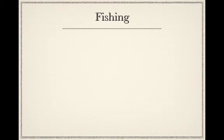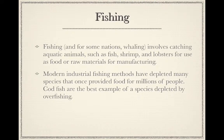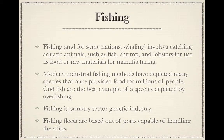Fishing — and for some nations, whaling — involves catching aquatic animals such as fish, shrimp, and lobsters for use as food or raw materials for manufacturing. Modern industrial fishing methods have depleted many species that once provided food for millions of people. Codfish are the best example of a species depleted by overfishing. Fishing is a primary sector genetic industry, and fishing fleets are based out of ports capable of handling the ships.